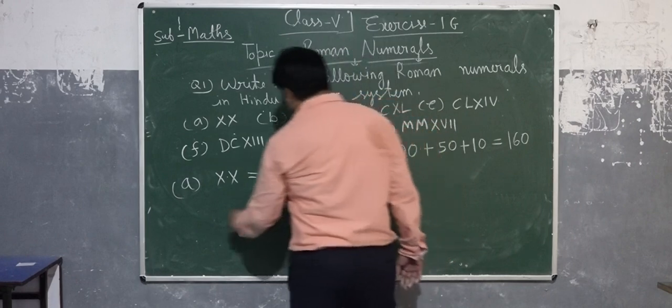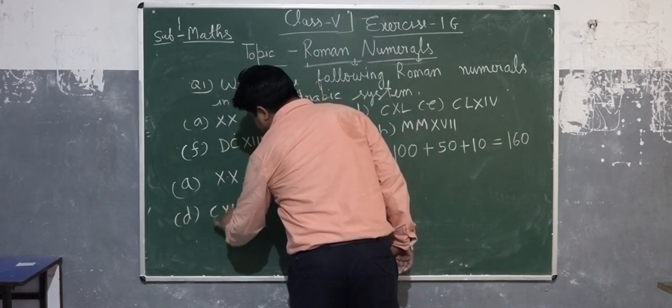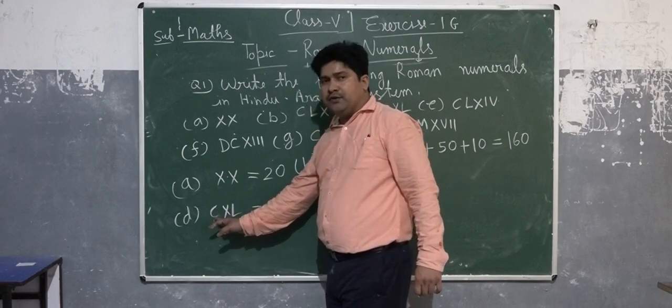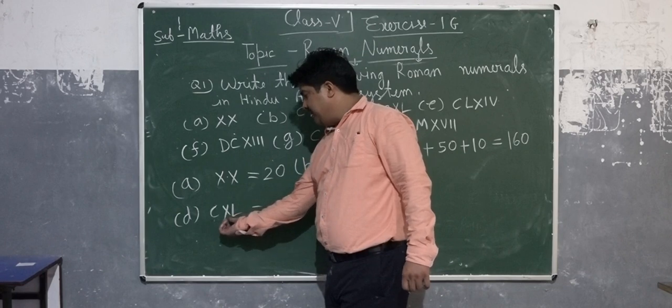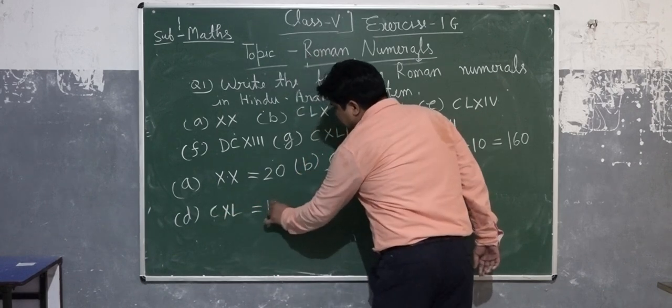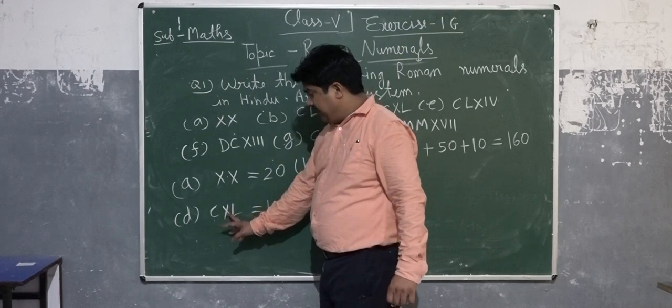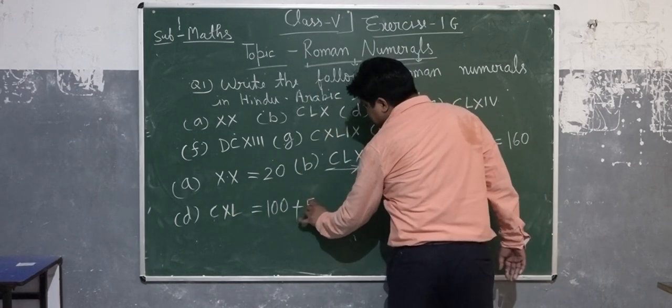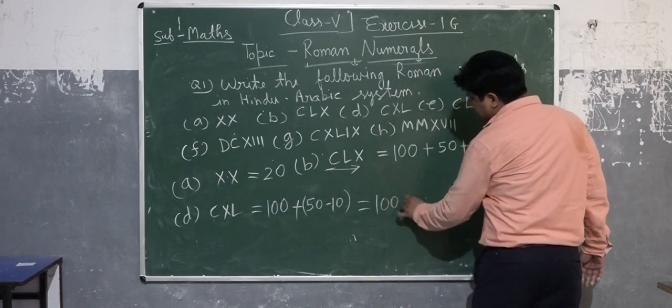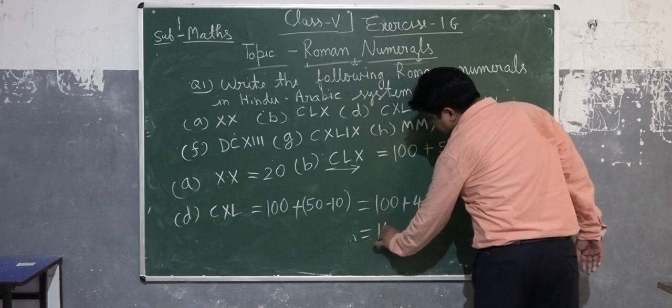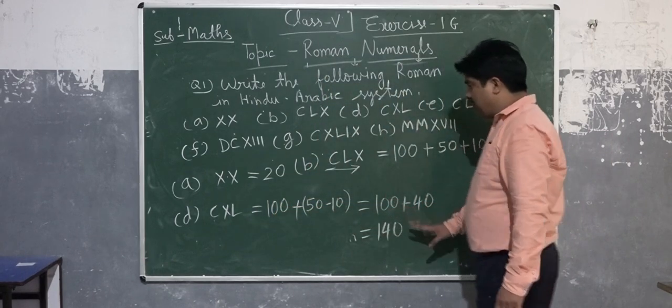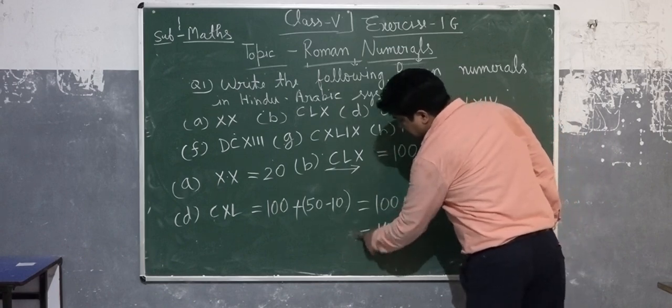Now I'm going to solve part B. We're looking at C is 100, X is 10, and L is 50. I know if C is a bigger number and X is placed before the bigger number, what will you do? We will write the value of C, then after we will subtract 10 from 50. If you're subtracting 50 minus 10, what will you get? 100 plus 40, it gives 140. So the value of CXL is 140.